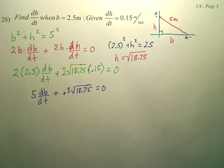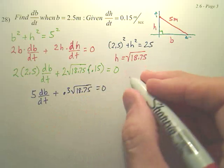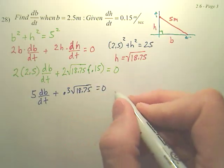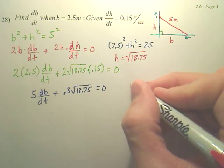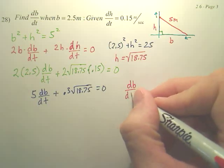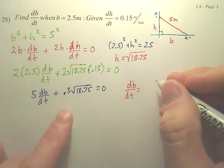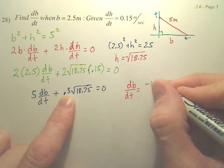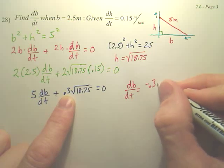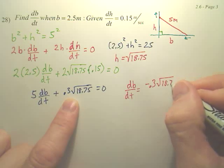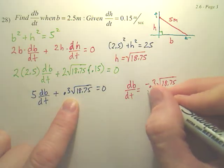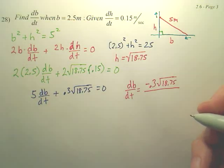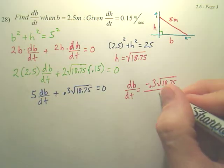And again, this one will be nasty numbers. But if we finish this off, if we basically minus this over and then divide, you're going to get db/dt is equal to negative 0.3 square root of 18.75 over 5.